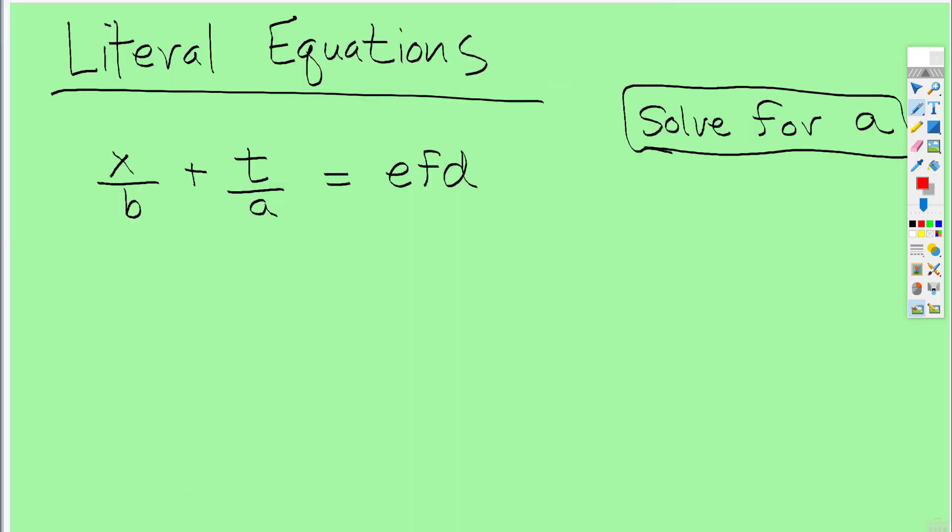All right. So I think I might have another one. Okay. I want to get a by itself. Let's do it another way. Let's get this by itself. So I'm going to subtract x over b on both sides.